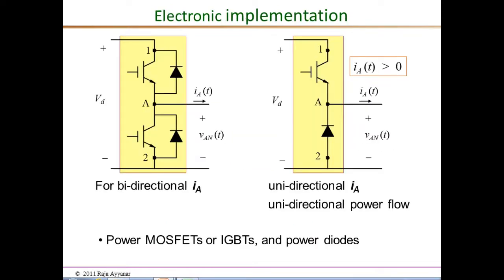The actual electronic implementation of the bi-positional switch is shown here. If the pole current I_A needs to be bi-directional — both positive and negative — then we need the full complement of four switches: two control switches (IGBTs or MOSFETs for DC-DC converters) and two diodes. The control switches are driven by gate drive signals applied to them.